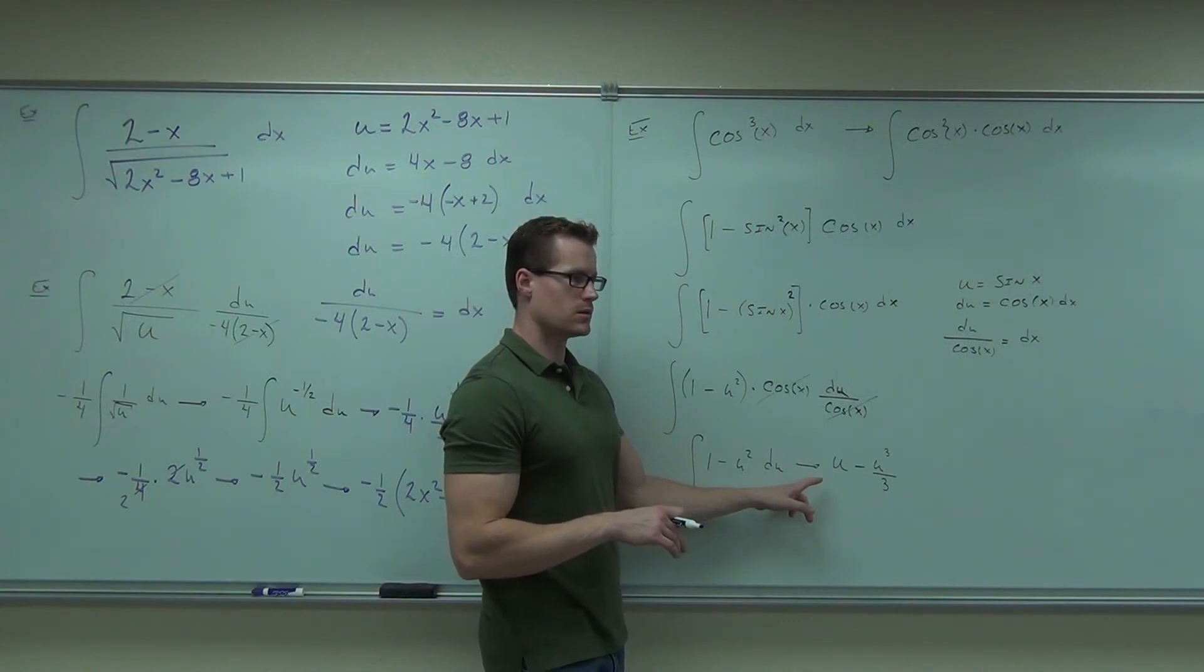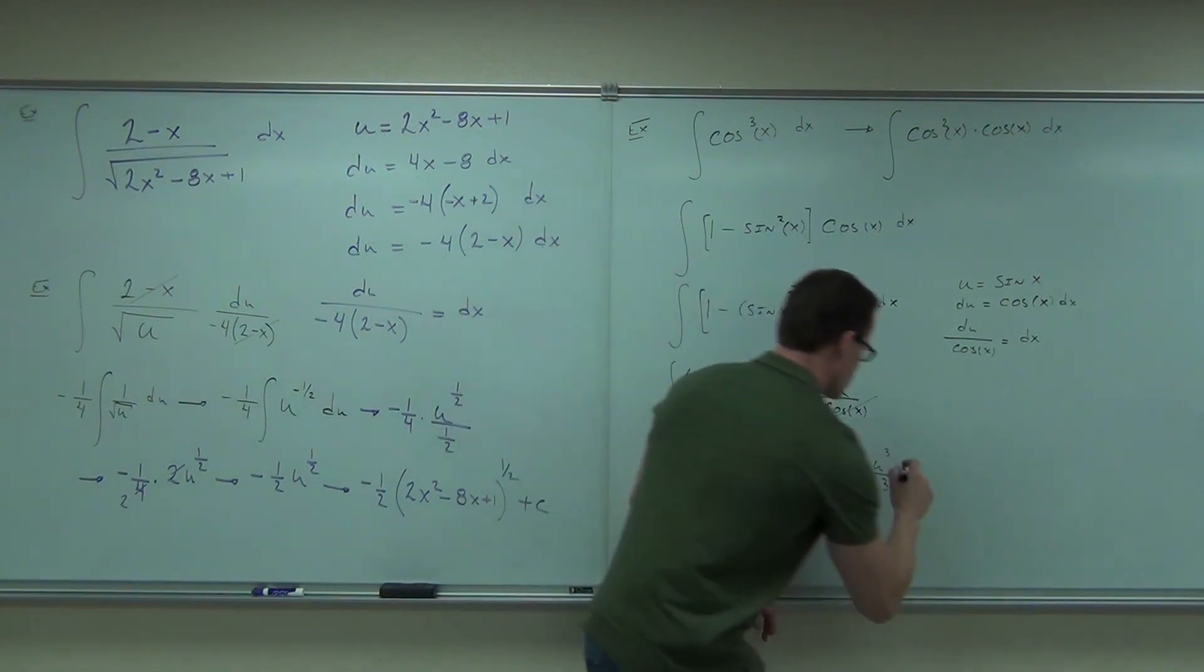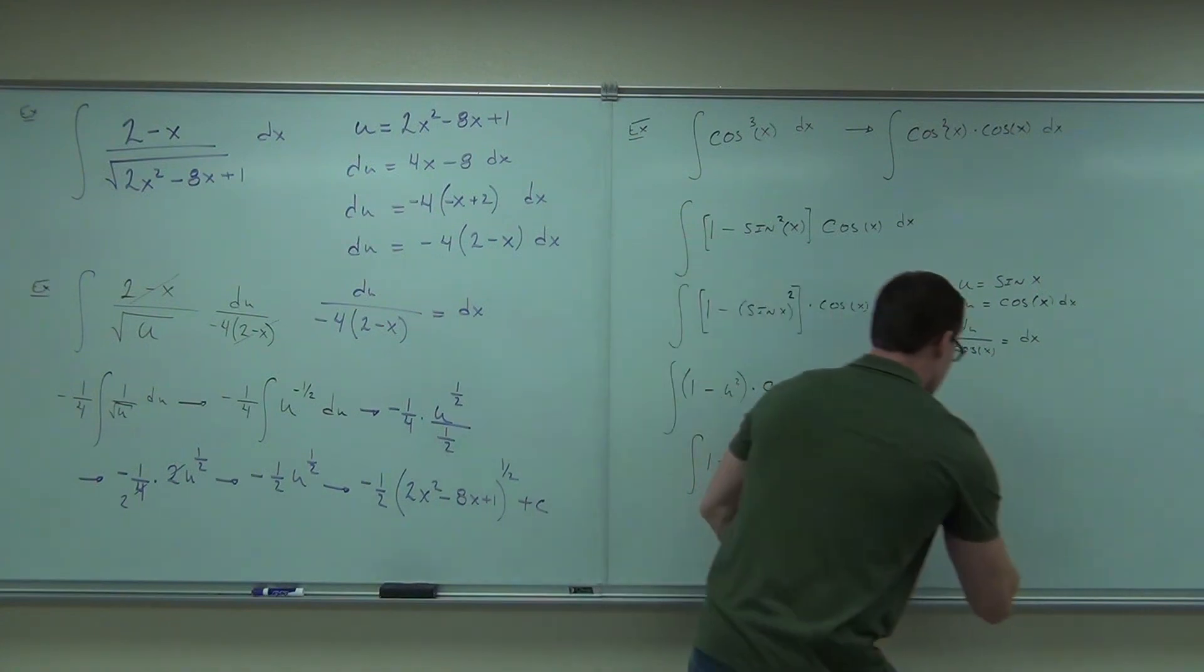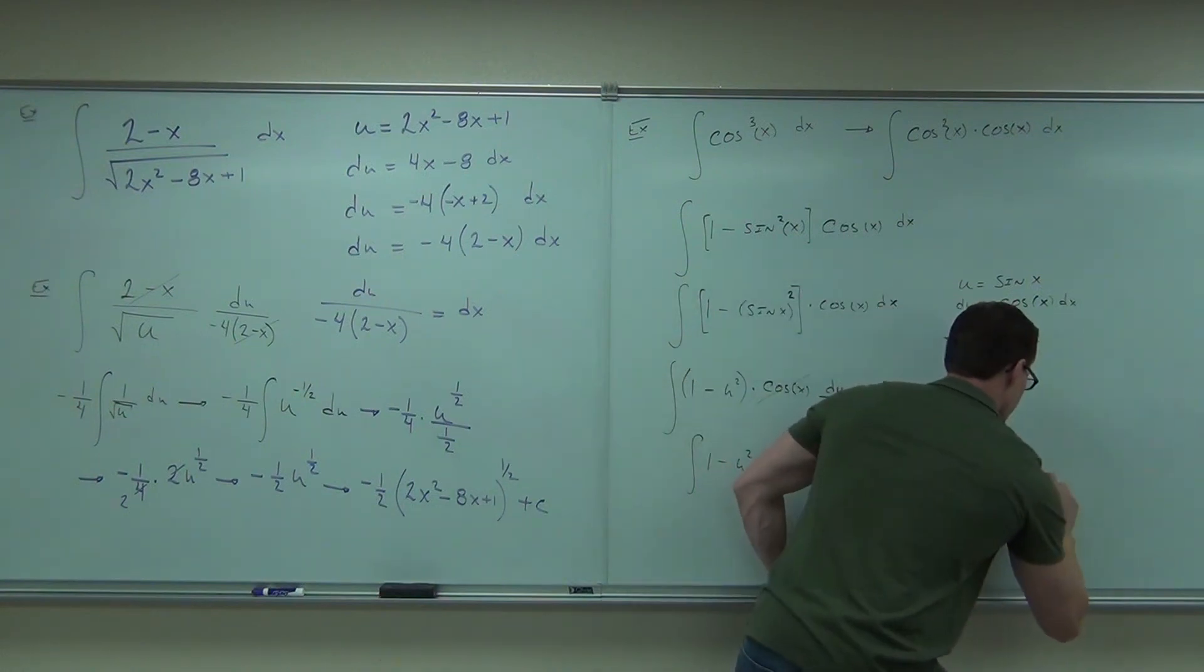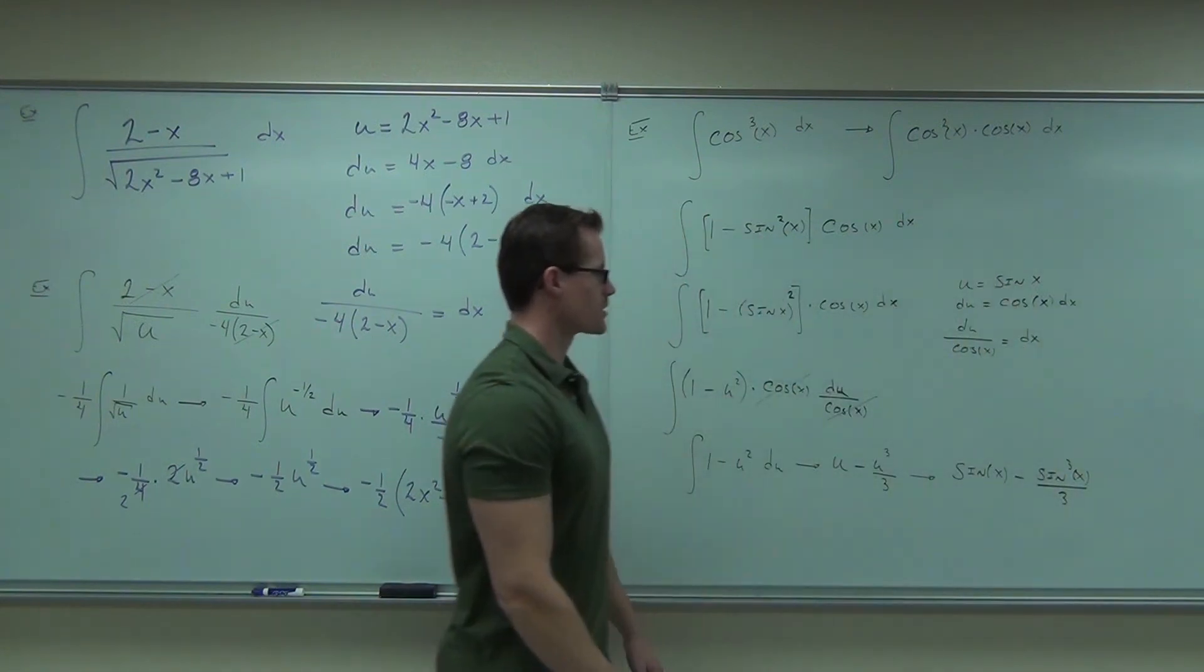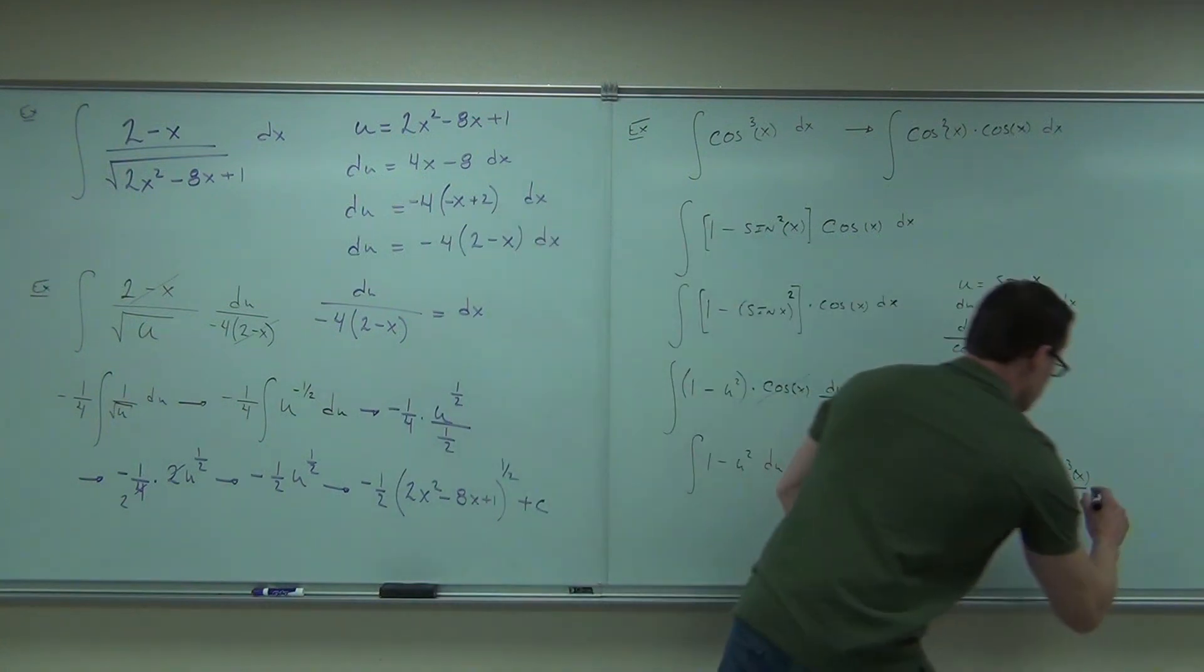We're going to add plus c at the end. Substitute. You can add it here. I don't care. Substitute in. Yes. So u was right here, sine x. Sine x minus sine cubed x over 3 plus c. That's what you need.